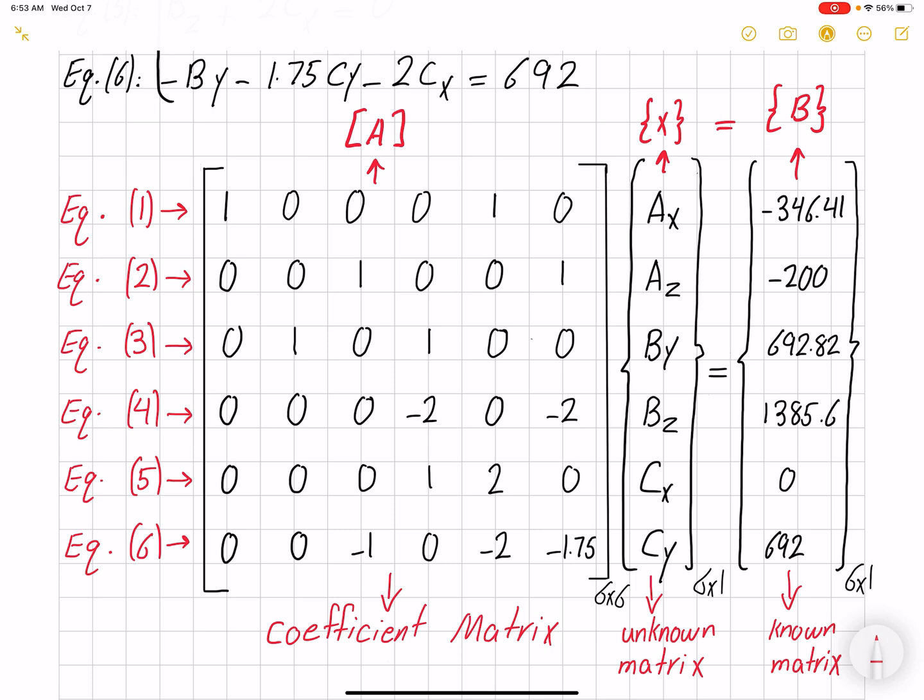First write your unknown matrix, then we develop our coefficient matrix based on our unknown matrix. Each row is representing an equation. We have six equations so we're going to have six rows. Our coefficient matrix is going to be 6x6, our unknown matrix 6x1, and our known values would be 6x1.